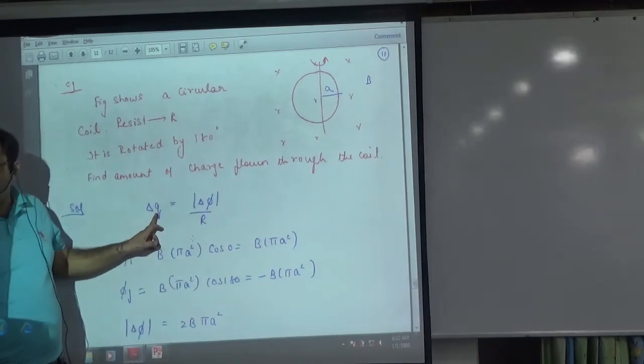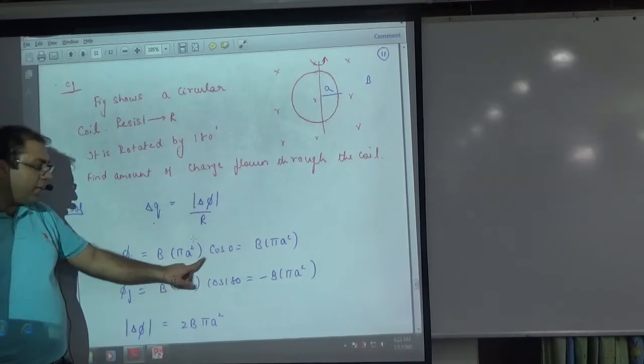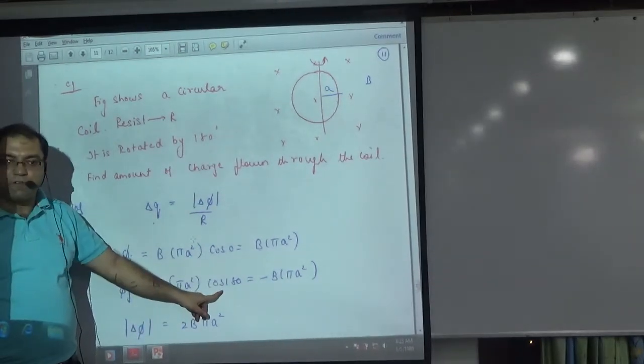So initially, the formula of total charge is 1 by R into total change in flux. What is initial flux? B into area into cos 0. And final, no B change, no area into cos of 180.